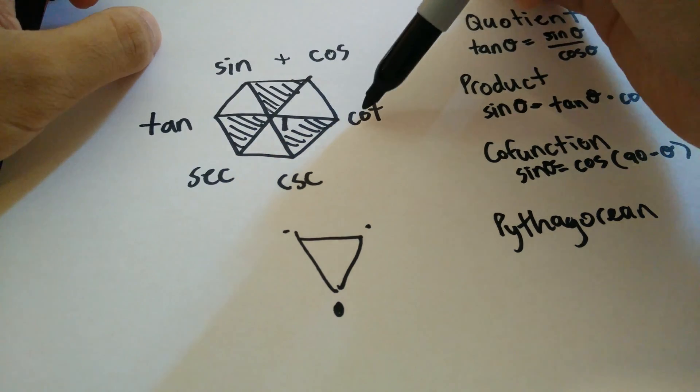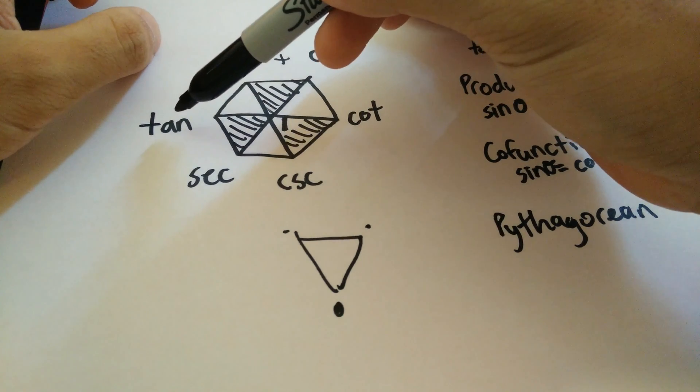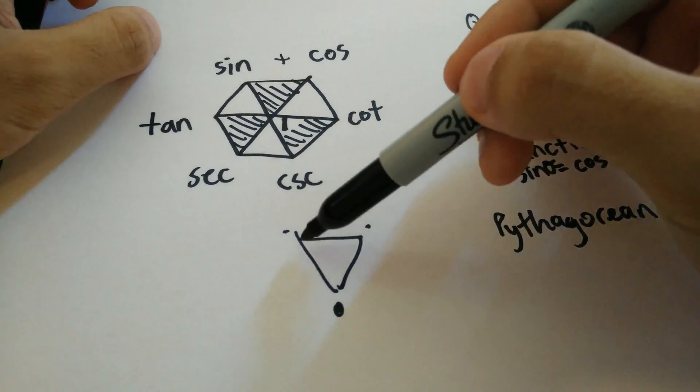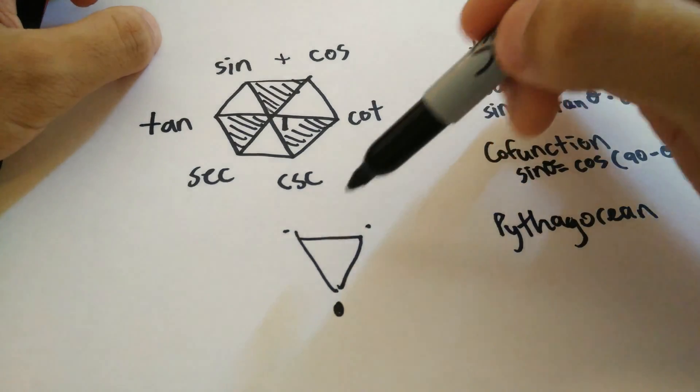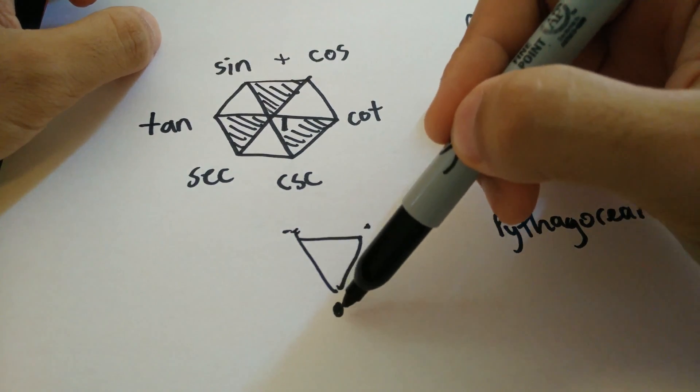1 plus cotangent squared theta is equal to cosecant squared theta. You see the funnel? That's how I remember it. I don't know how else to describe it. But the two at the top add up to the one below.